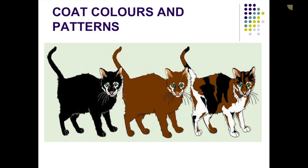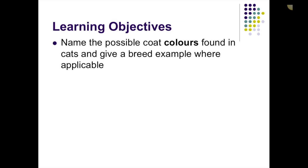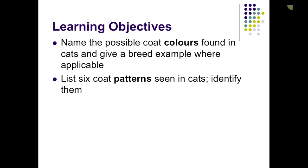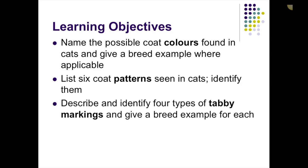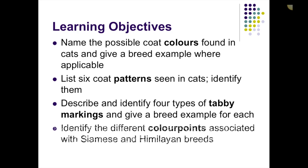Let's look at coat colors and patterns for our feline friends. Learning objectives: name the possible coat colors found in cats and give a breed example where applicable; list six coat patterns seen in cats and identify them; describe and identify four types of tabby markings and give a breed example for each; identify the different color points associated with Siamese and Himalayan breeds.